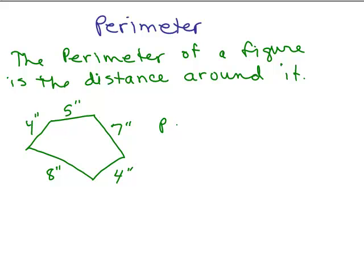So the perimeter, I'll just call it P for perimeter, you would just add all those sides together. And I'm going to leave off the inches for now, but you would just add the 4, the 5, the 7, the 4, and the 8. So what does that give you? Let's say we have 12 and 12, 24, 28. So it would be 28 inches. It's just how far around it is in a figure.